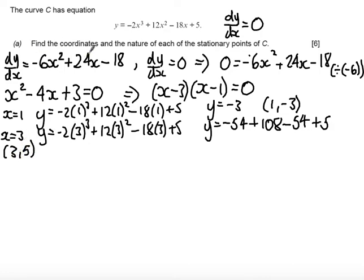Now we've found the coordinates of the stationary points. We need to find the nature. So to find the nature I need to find the second derivative to perform the second derivative test. So differentiating dy by dx, I get minus 6 times 2 is minus 12x. And then 24x differentiated gives us plus 24.